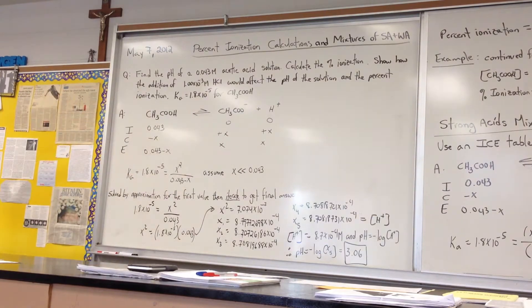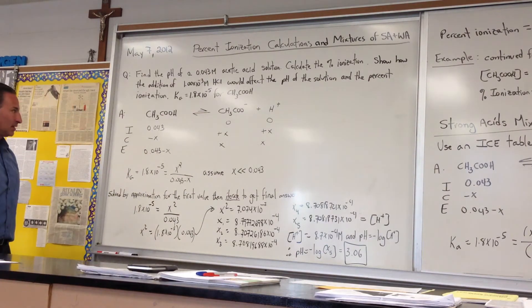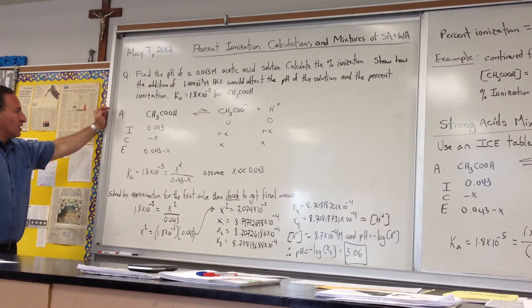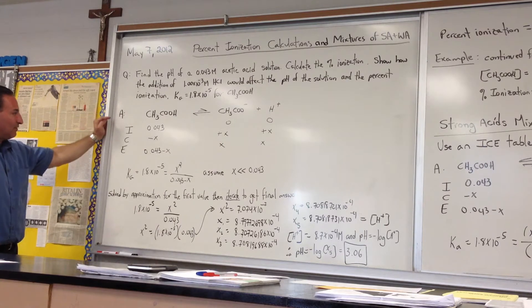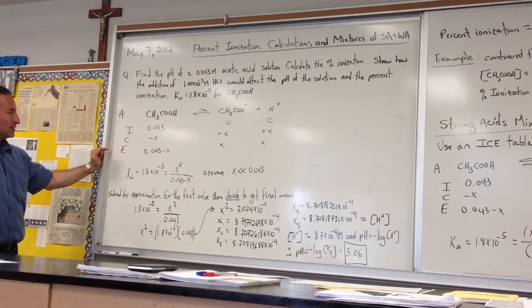So the percent ionization will be diminished by the presence of a strong acid. The first part of the question is to find the resulting pH for a solution of 0.043 molar acetic acid. I find it helps to draw an ICE table.